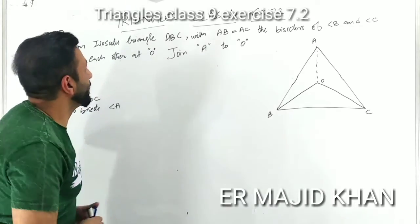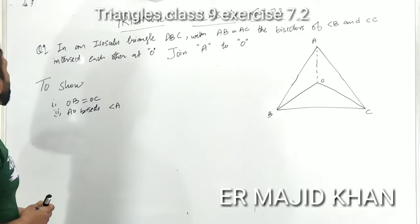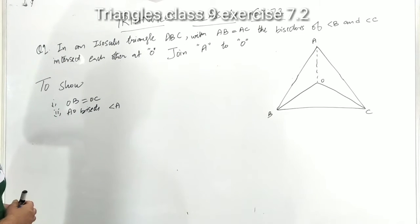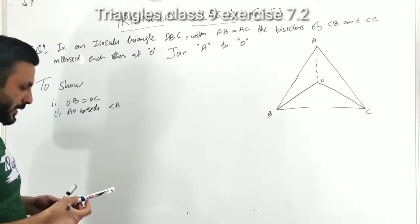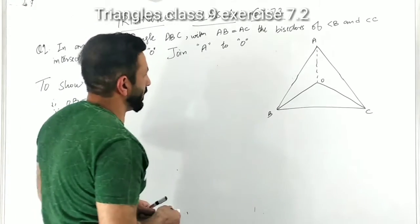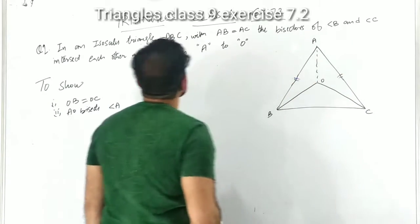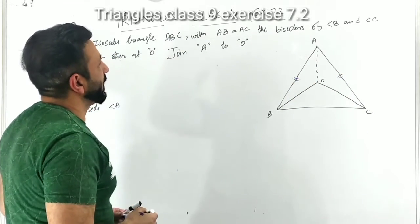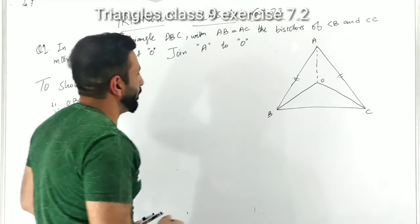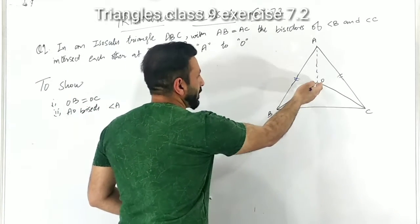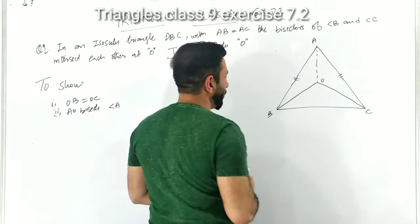Okay students, let's move to our next exercise — Exercise 7.2, Question 1. The bisector of angle B and angle C intersect each other at O. So the angle B bisector and the angle C bisector meet at point O.